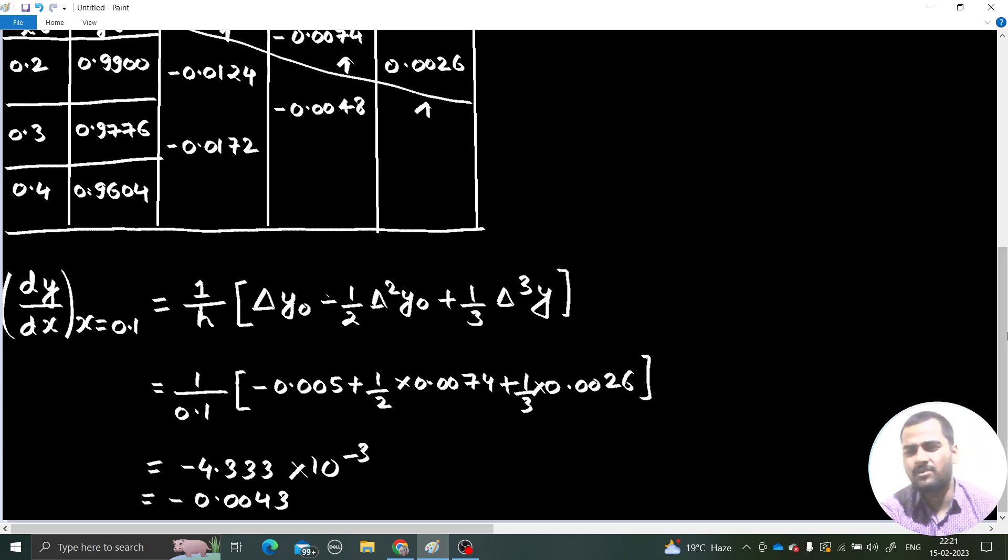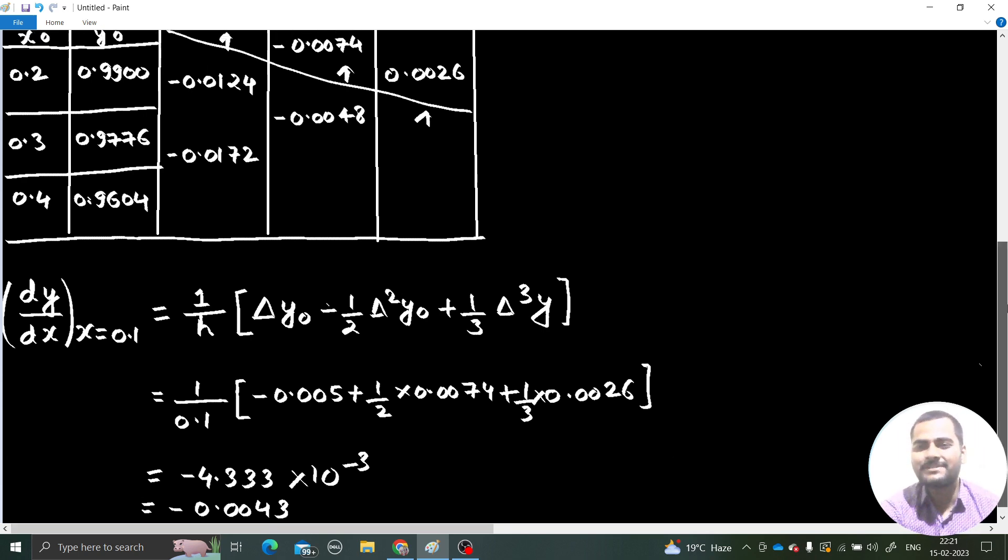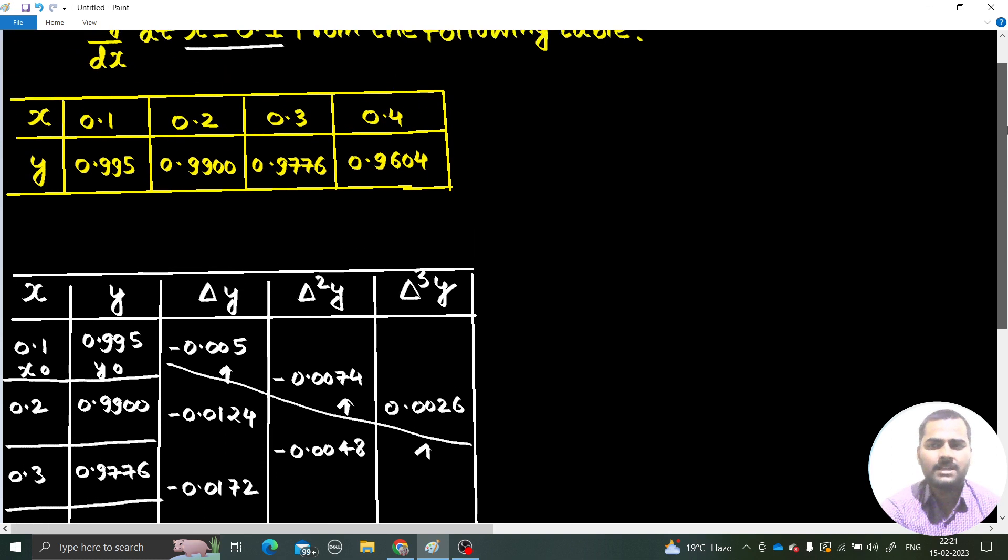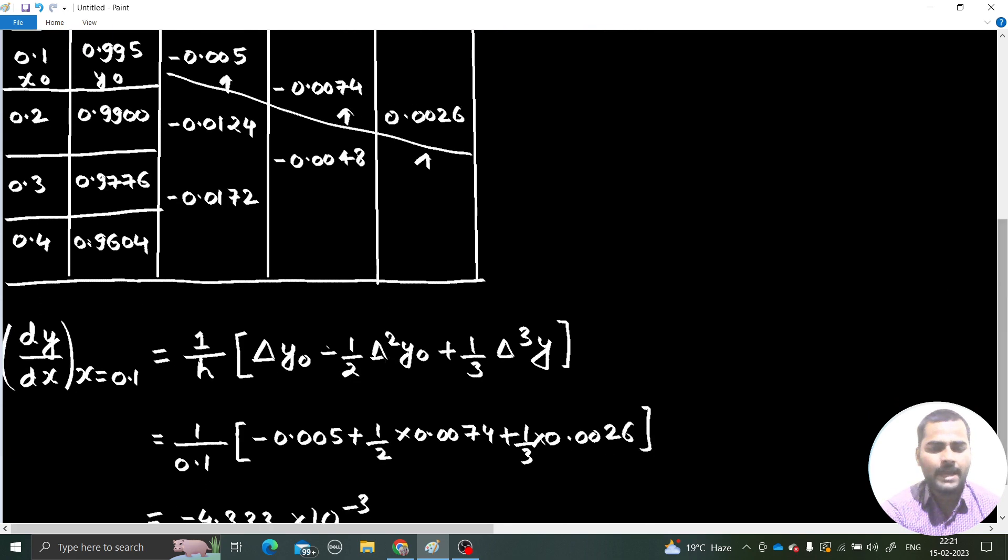So it is the answer, answer is right there in front of you. Not matching with the textbook - I don't know why in this chapter my answer seems not to be matching. But yes, the rule is similar to what we have seen. Plus minus plus, I hope I have done correctly. Yes, things are correct. Formula is this only: 1 by h first difference minus half times second difference plus 1 by 3 times third difference. And difference will be taken corresponding to this y₀.